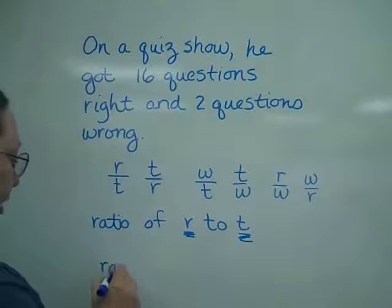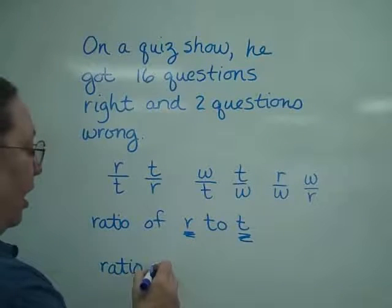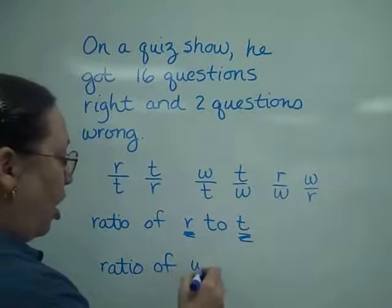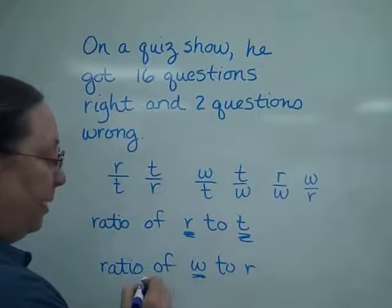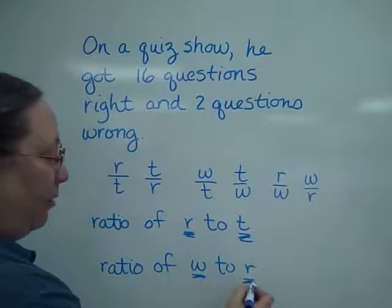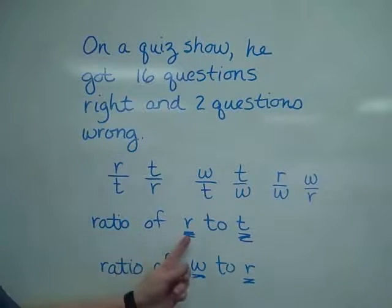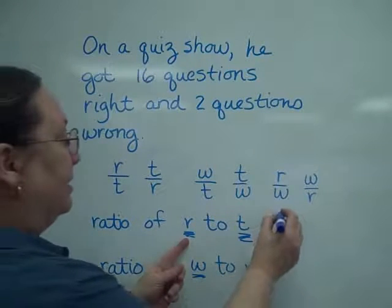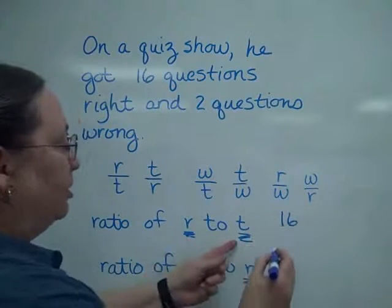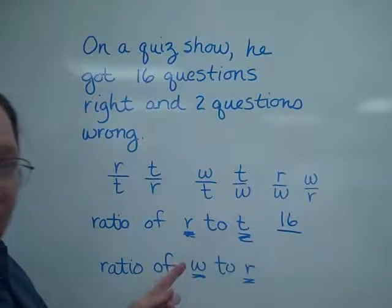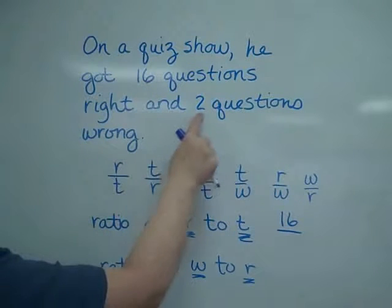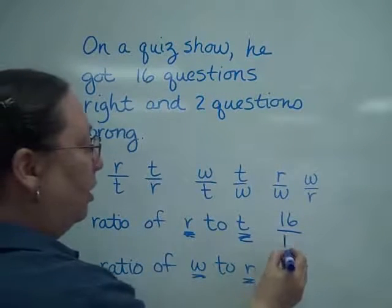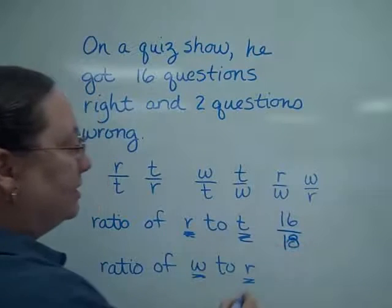If I had said what is the ratio of the wrong to the right, the wrong would be the top, the right would be the bottom. So looking at this, the right is 16, the total, oh they didn't give you the total, but I know that the 16 and the 2 give me my total questions.